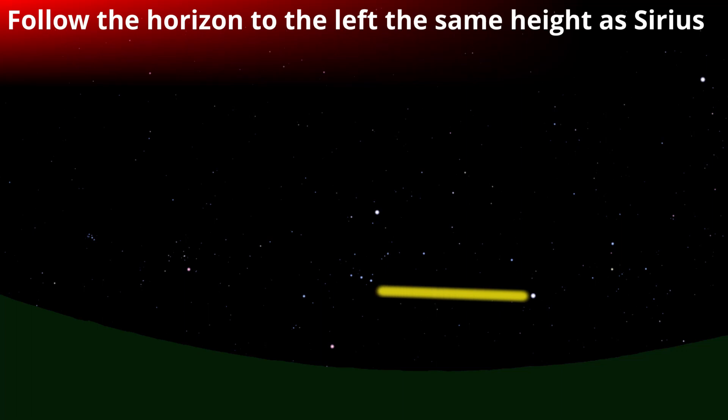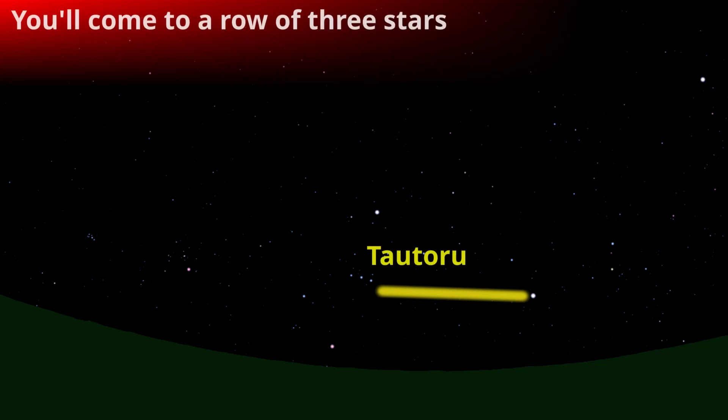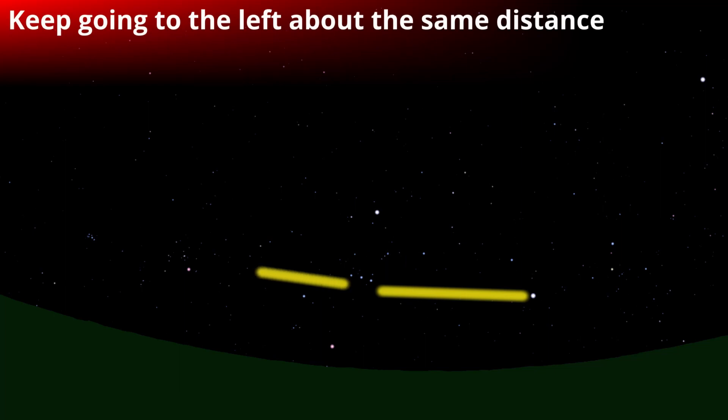So about that same height above the horizon go left and you'll come across three stars, Tautoru or Orion's belt, that's what they're called.